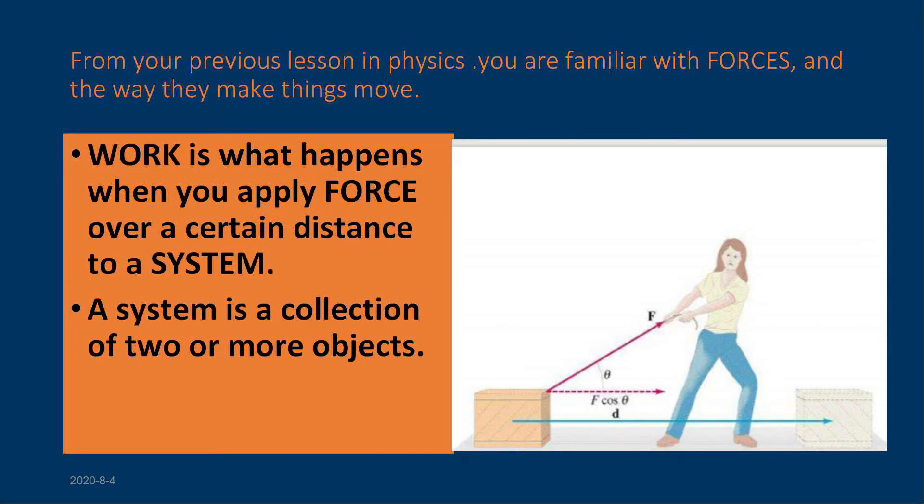From your previous lesson in physics, you are familiar with forces and the way they make things move. Work is what happens when you apply a force over a certain distance to a system. A system is a collection of two or more objects. For example, if you're using a rope to drag a box across the floor, we might say that the box is your system and the force you're using to pull on it is an external force.